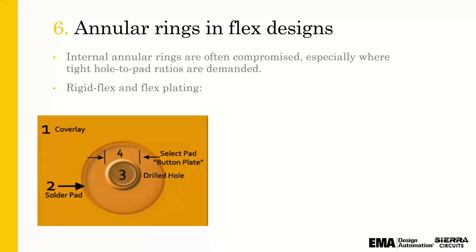Annular ring is important in every PCB design and especially important in flex and rigid flex designs because of the button plating that has to happen. On a regular board, you drill vias and plate the vias and outer layer surfaces at the same time. In a rigid flex or flex, that is not the case. You do a button plate — imaging and plating just a little bit outside the via — so you get your wrap, but you're not plating on the surface of the board. If you plate on the surface and have two different types of plating, when the board bends or flexes, you can have cracking. That's why only button plating is done for flex.